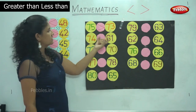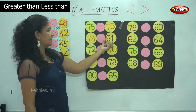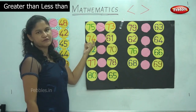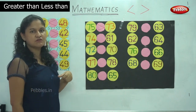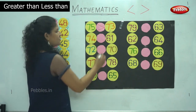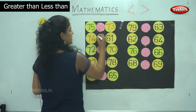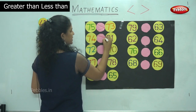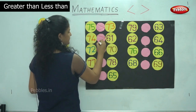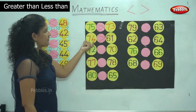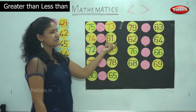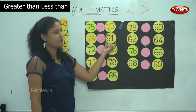Next we have 74 and 61. We have found out that 74 is the bigger number, so the mouth of the alligator opens towards the bigger number. We read it as 74 is greater than 61.